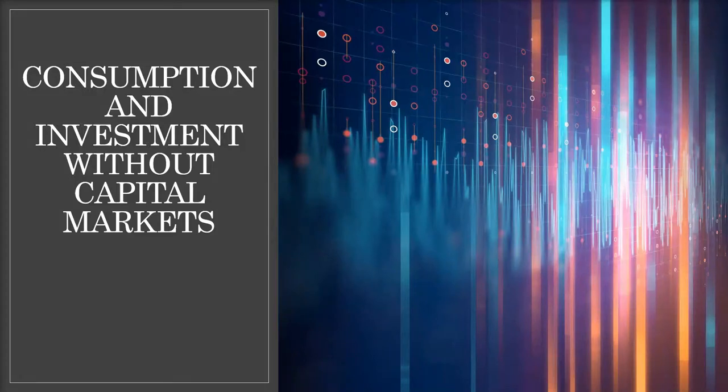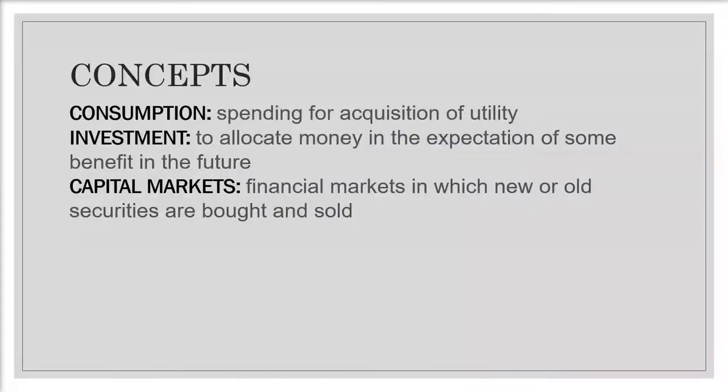In this video we're going to take a look at consumption and investment without capital markets. Consumption is the spending for acquisition of utility; investment is done to allocate money in the expectation of some benefit in the future. We'll be looking at consumption as consumption now and investment as consumption in the future. Capital markets are financial markets in which new or old securities are bought and sold. When we say that we don't have capital markets, it means that it is a Robinson Crusoe economy without the option for individuals to borrow or lend.